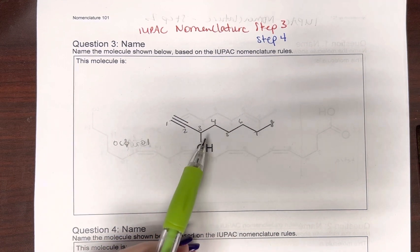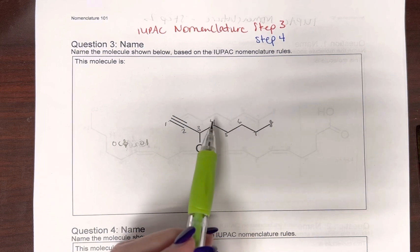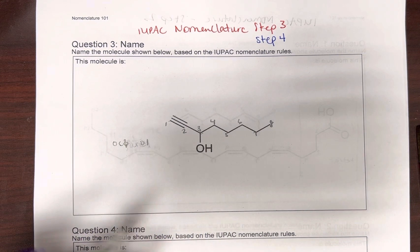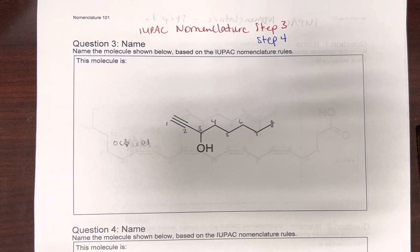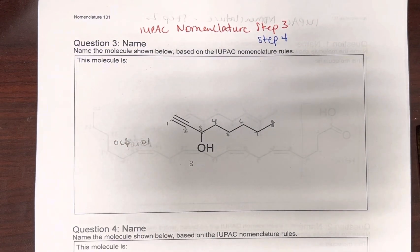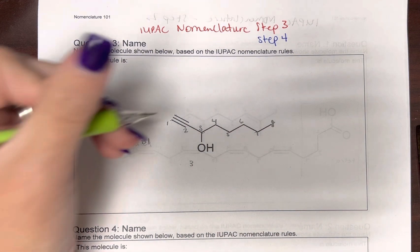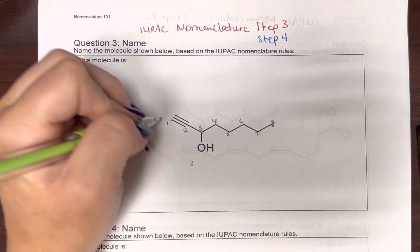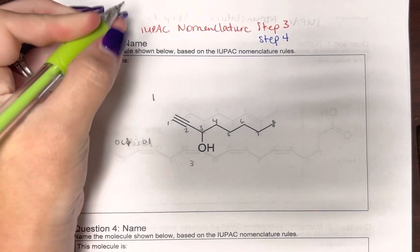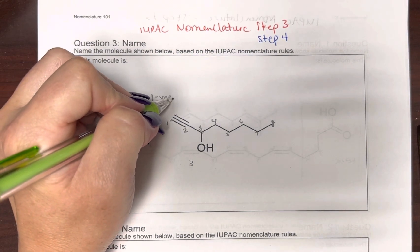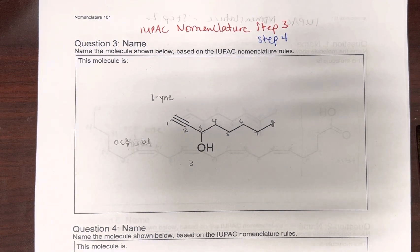If I start this way, it's one, two, three, four, three. If I start the other way, it's one, two, three, four, five, six. So it has to be the first direction. So the alcohol is going to be at carbon three. And our triple bond — we always put the one that it starts with — so our triple bond is going to be one. Remember, triple bonds have a suffix of Y-N-E.